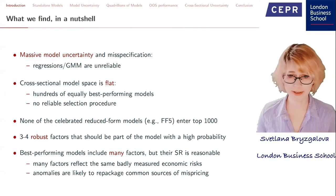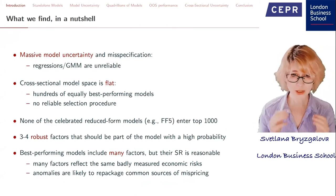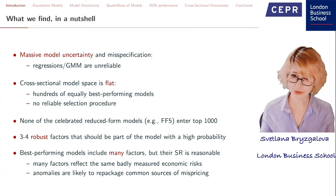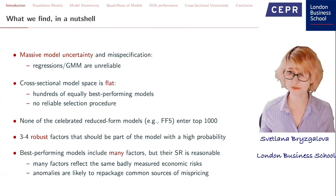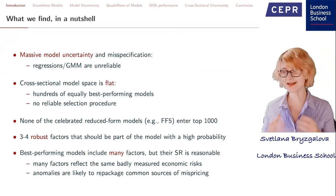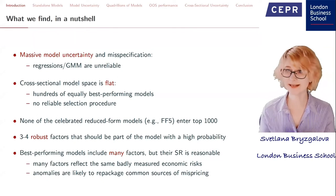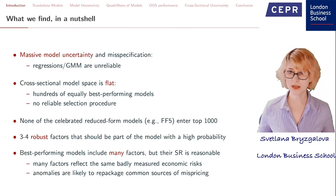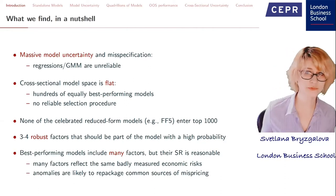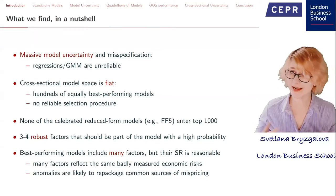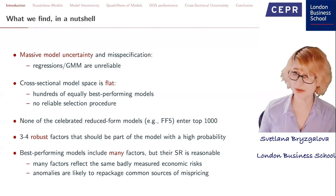What do we find empirically? First, there is massive model uncertainty and misspecification, implying that standard regression or GMM-based approaches are not reliable. All the models estimated so far are profoundly misspecified, and misspecified in such a way that the cross-sectional model space is essentially flat — there are hundreds of equally best-performing models that cannot be statistically differentiated from each other. This means it is impossible to design a reliable selection procedure like lasso or standard horse races for model comparison.